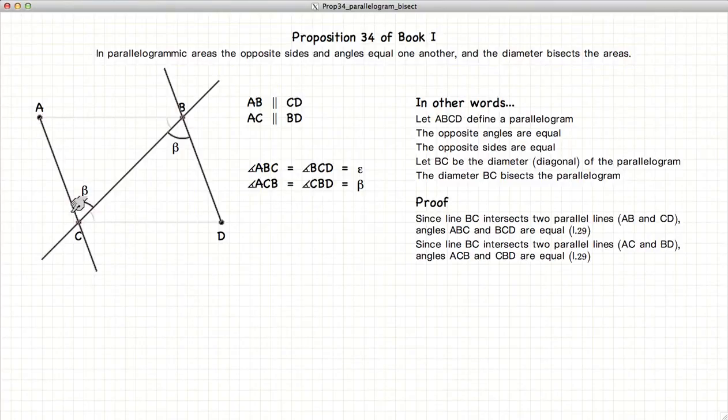If we look at the lines AC and BD, which are parallel, again, we have the inner angles are equal according to Proposition 29.